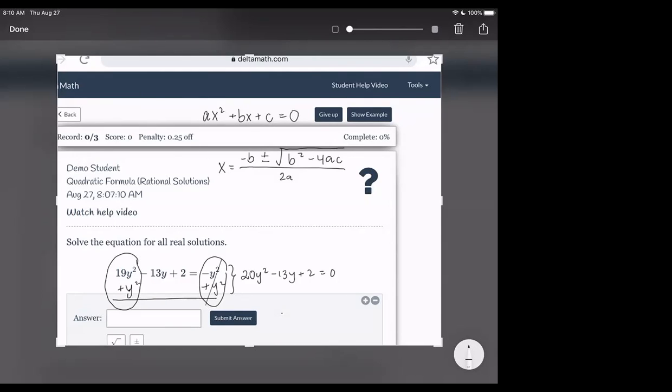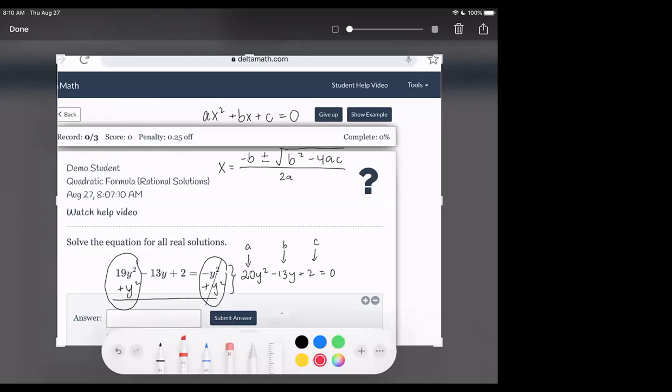So now we have it in standard form, and we can recognize that the 20 is our A, the negative 13 is our B, and the 2 is our C. So I'm going to do some color coding as you guys copy it down, or maybe you're working ahead because you already remember this. Either way is fine.